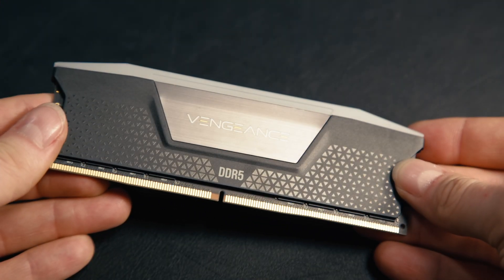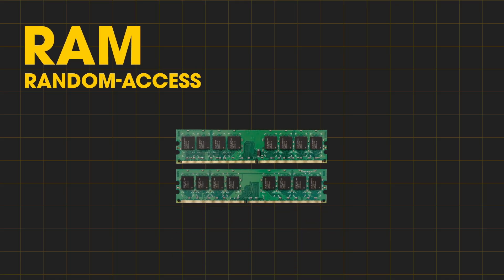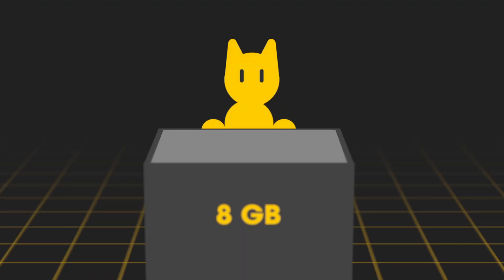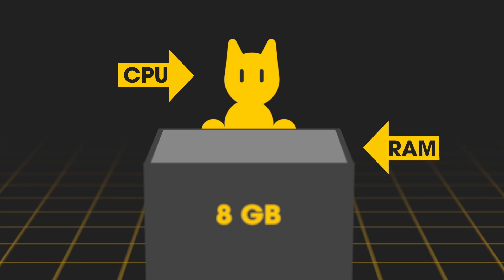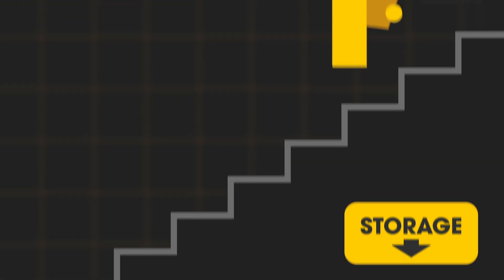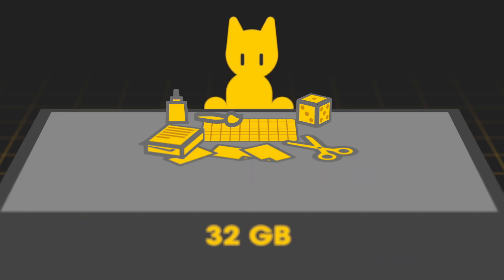A computer needs RAM — random access memory — the working memory of the computer for anything that is not stored permanently on a storage drive. Imagine the CPU as yourself and RAM as your desk. When you work on a project, you first fetch all the tools and resources you need from the basement — the hard drive — and place them on your desk so that you can reach and manipulate everything quickly. The bigger your desk is and the easier it is to reach your tools, the better. That's how it also is with RAM: the bigger and faster, the better.